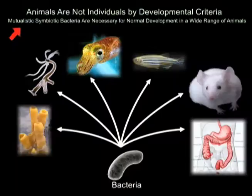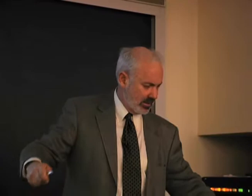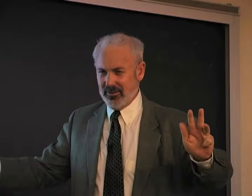Animals are not individuals by developmental criteria either. There are mutualistic symbiotic bacteria which are necessary for normal development — not for something special, just to make us who we think we are normally. So we're not anatomical individuals, we're not physiological individuals, we're not genetic individuals, we're not developmental individuals.